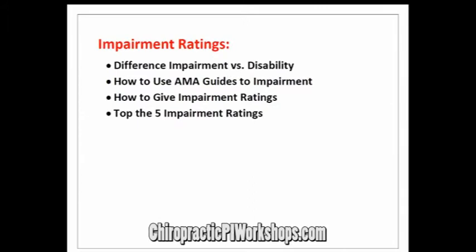We also teach how to give impairment ratings based on those injuries, and the top five impairment ratings and how to use them. Impairment ratings are used to quantify an injury — to take an injury and quantify it into a number, and then translate that number into a financial settlement. That's the purpose of the AMA Guides, and that's exactly what we teach you how to do.